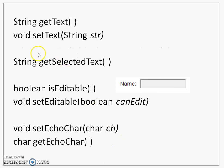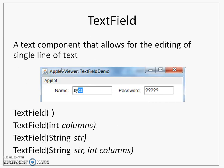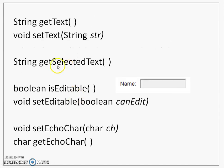Let's look at some of the methods of this class. First is getText, second is setText. The setText method will help you to put a string inside a text field, and getText will help you to fetch that string from the text field. In the previous slide, you could see that 'cs' is selected — you know how to do that selection with the mouse, and then you can fetch the selected text by using the getSelectedText method in the program.